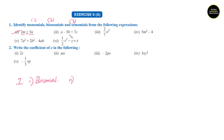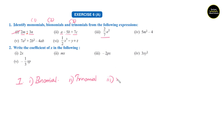Second question: a minus 5b plus c. a is the first term, 5b is the second term, 7c is the third term. So this has three terms and it is a trinomial. Third question: 2 by 7 a square. This has only a single term. Therefore, it is a monomial.